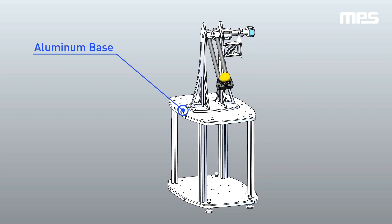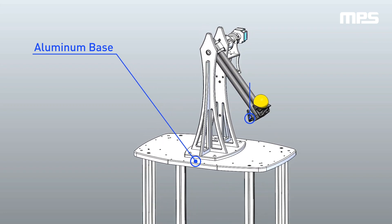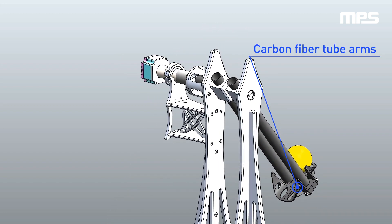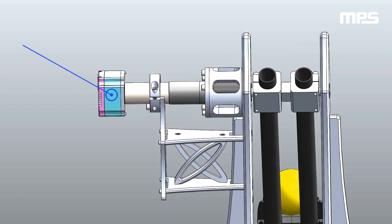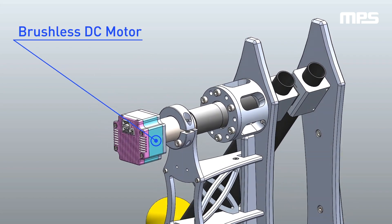The system consists of a primary aluminum base structure, lightweight rigid carbon fiber tube arms, and a plastic 3D printed backstop. The system is driven by a brushless DC motor and planetary gearbox.